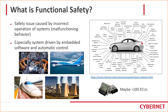Introduction. As the name implies, functional safety basically deals with safety issues or potential hazardous situations caused by the incorrect operations of systems, or what we call malfunctioning behavior of systems, especially for systems driven by embedded software and automated control. As we know nowadays, in almost all industries, there are more and more so-called automated embedded systems being used in daily operations. For instance, we have automated robotics in the factories.